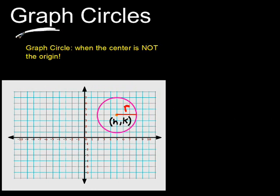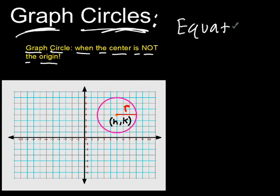All right, y'all. Let's graph some circles, but here's the deal. We're going to graph a circle when the center is not the origin. Okay, what is the equation of that? Here's the equation. We are going to have an h and a k and a radius.